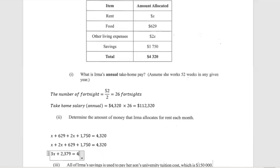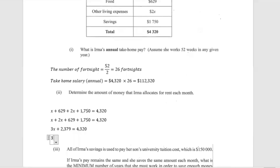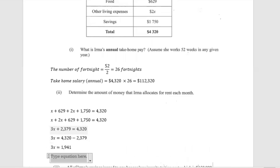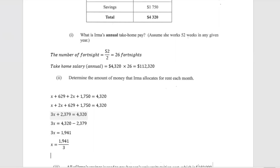So we have 3x plus $2,379 equals $4,320. Subtracting $2,379 from both sides: 3x equals $4,320 minus $2,379, which gives 3x equals $1,941. Dividing both sides by 3: $1,941 divided by 3 gives us x equals $647.